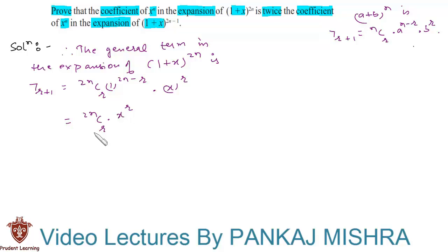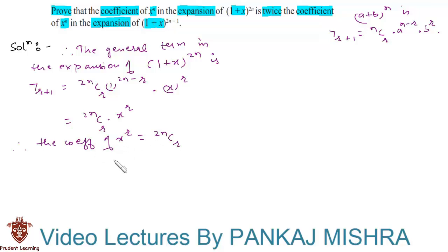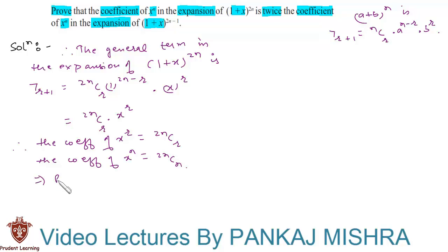Therefore we can say that the coefficient of x raised to r is 2nCr. Similarly, the coefficient of x raised to n is equal to 2nCn. Let us call it p. This implies p = 2nCn — call it equation 1.